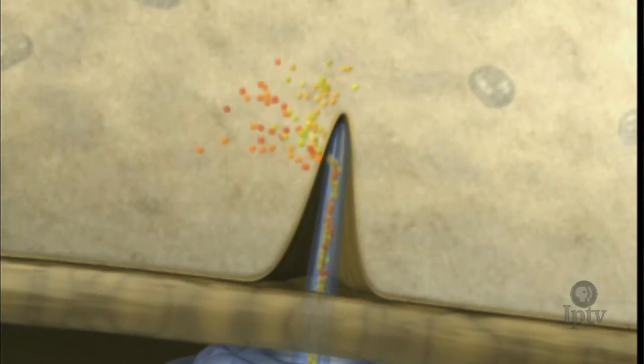The nematode won't eat this cell. Instead, it uses the stylet to deliver signal molecules.